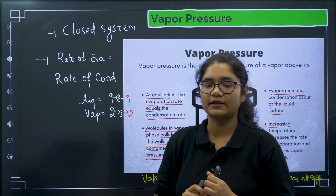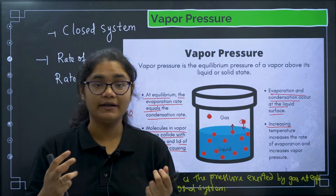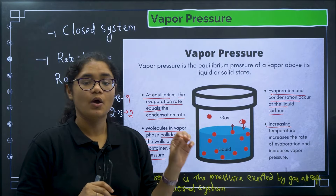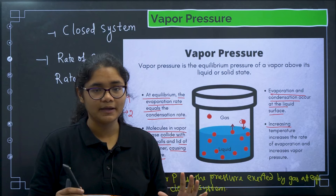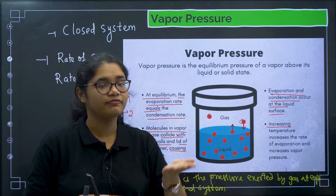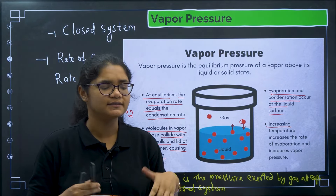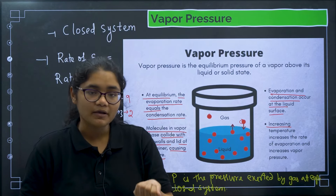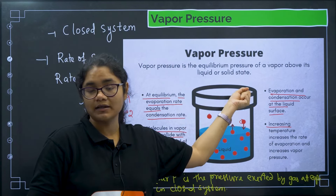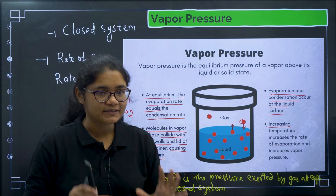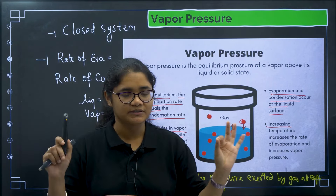I hope this concept of vapor pressure is very clear. The definition is: vapor pressure is the pressure exerted by gas at equilibrium in a closed system. When someone asks what equilibrium means, it means the rate of evaporation equals the rate of condensation, i.e., particles going liquid-to-vapor equal particles going vapor-to-liquid.